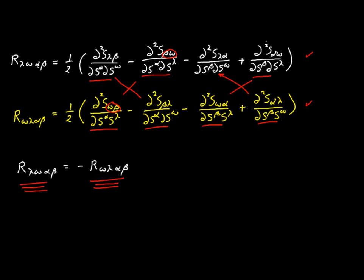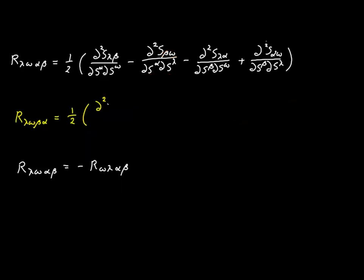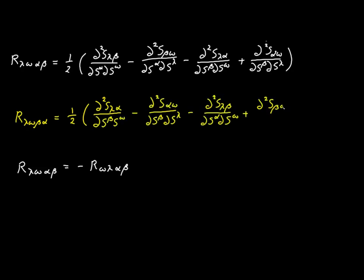Let's move on to the next one. This time we'll swap indexes alpha and beta. Notice that each term in the new expression has a negative counterpart in the original, meaning our Riemann tensor is also anti-symmetric with respect to the third and fourth indexes.